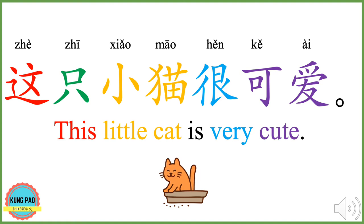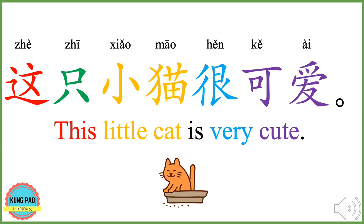这只小猫很可爱。 这只 means this. 只 is a measure word for cat. 小猫 means little cat. 小 means small or little. 猫 means cat. 很 means very. 可爱 means cute or adorable. 这只小猫很可爱 means this little cat is very cute. Now you can try.